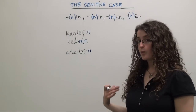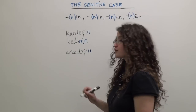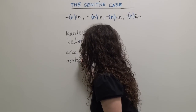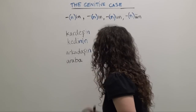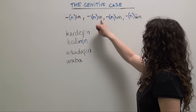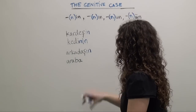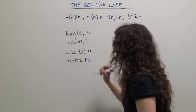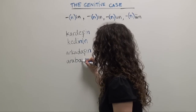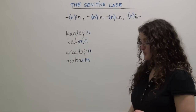Another example that ends in a vowel: let's say we want to say 'of the car.' The Turkish word for car is araba. Vowel harmony tells us we should choose 'ın,' but since araba ends in a vowel, we'll need the buffer N, giving us arabanın — 'of the car.'